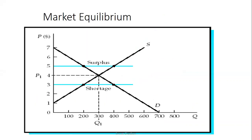Here, we're having the demand curve and the supply curve, and as you can see, we can reach a certain equilibrium, which is the intersection between the demand and the supply curve. We're having a price of equilibrium, which is P1 at $4 — it's the price that equates the quantity demanded with the quantity supplied. We're also having Q1, 300, which is the quantity of equilibrium, and it's the amount that people are willing to buy and sellers are willing to offer at the equilibrium price level.